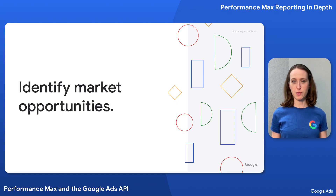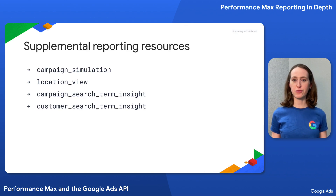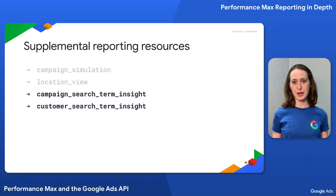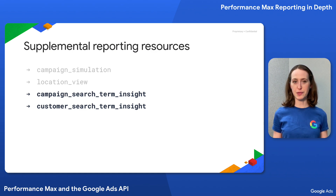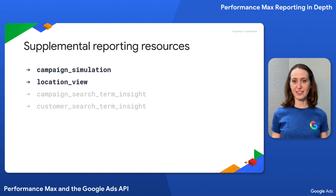One of the most exciting use cases for reporting in Performance Max is to uncover new insights and tap into market opportunities you may not even have been aware of. This is where those supplemental reporting resources are especially useful. We don't have time to go over examples for all of these reports, so for this session I'm going to walk through examples for Campaign Search Term Insight and Customer Search Term Insight.